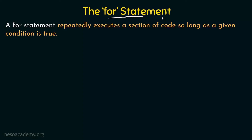Coming to the for statement: a for statement repeatedly executes a section of code so long as a given condition is true. We see that this is somehow similar to the while statement. This for statement also repeatedly executes a section of code until a given condition is true. There is a condition, and as long as it is true, the section of code within the for loop will be executed. Let us see the flow of control of this for statement.